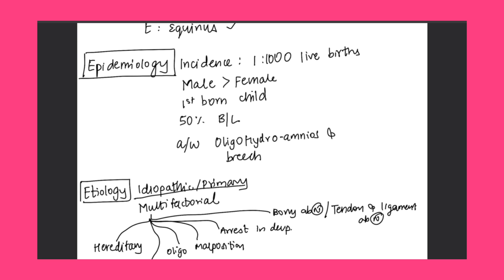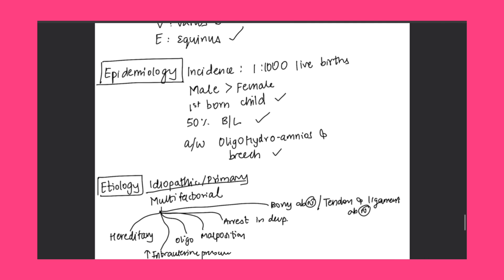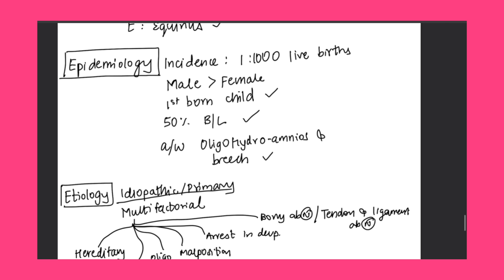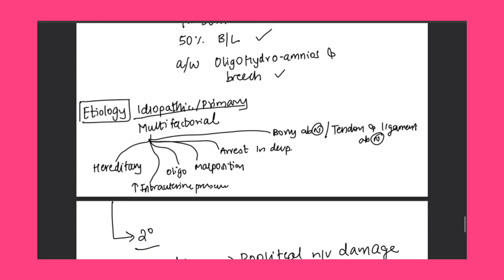Epidemiology: incidence is 1 in 1000 live births, male greater than female, first-born child. 50% of cases are bilateral. It is associated with oligohydramnios and breech presentation. In this video we will discuss it in the manner you are supposed to write in the theory examination — short and crisp.